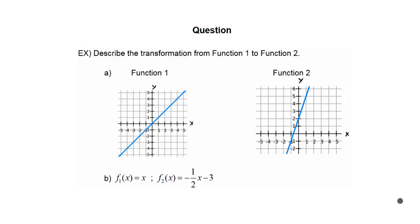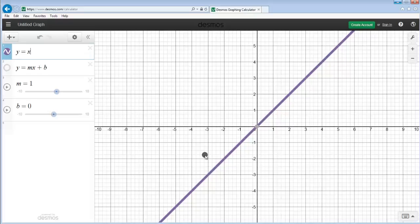In this question we have two parts, A and B, and we need to describe the transformations that are happening from function 1 to function 2. It's important to point out that in function 1 of both of these parts, we're using the parent function of all linear functions. I already have y equals x graphed right here in Desmos, and it's a line with a slope of 1 that's going through the origin at (0, 0).